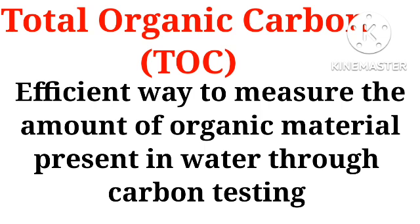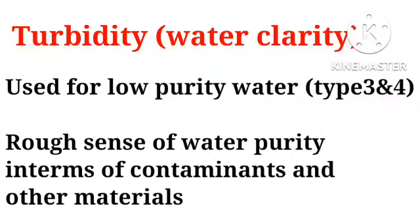The last factor is turbidity, that is water clarity. This is also used for low purity water types, that is type 3 and type 4. It gives a rough sense of water purity in terms of contaminants and other materials. We will be comparing different types of water in the upcoming lecture. Thank you.